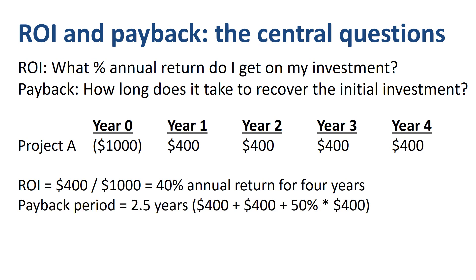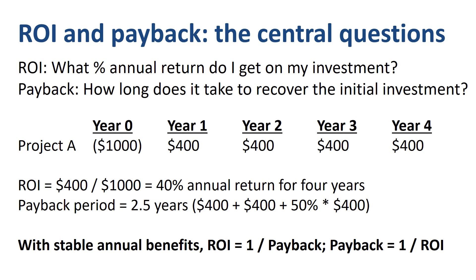The payback period is 2.5 years: $400 of benefits in year 1, plus $400 in year 2, plus 6 months worth of benefits in year 3 for the final $200, at which point total investment equals total benefits. With stable annual benefits like in project A, ROI equals 1 divided by payback — 1 divided by 2.5 is 0.4 or 40% — and payback equals 1 divided by ROI — 1 divided by 0.4 is 2.5.